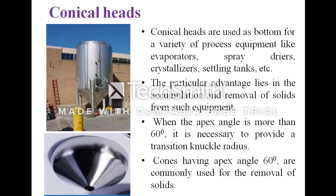The next type is the conical head. Conical heads are used as a bottom for a variety of process equipment like evaporators, spray dryers, crystallizers, settling tanks, etc. Their particular advantage lies in the accumulation and removal of solids from such equipment. When the apex angle is more than 60 degrees, it is necessary to provide a transition knuckle radius. Cones having an apex angle of 60 degrees are commonly used for the removal of solids.